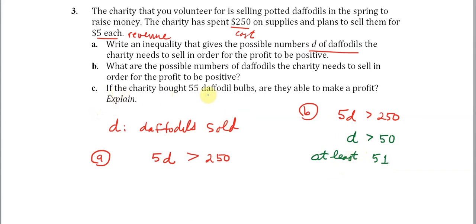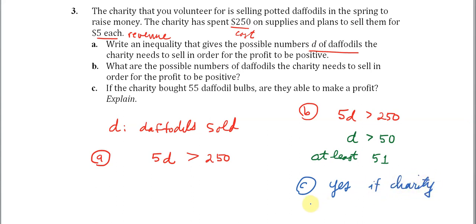Part C says: if the charity bought 55 daffodil bulbs, are they able to make a profit? The answer is yes, because we needed to sell 51 or more and they have 55. So yes, if the charity sells 51 or more they are able to make a profit, and they have 55, so they're fine.